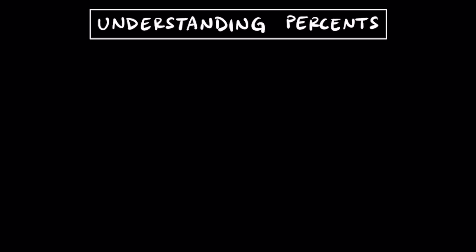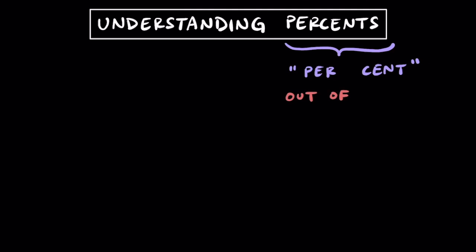If you weren't aware of this already, the word percent really comes from two different words: per and cent. While per just means out of, cent represents 100. Think about how the word century represents 100 years and that there are 100 cents in a dollar. Simply put, the word percent just means a ratio per 100.